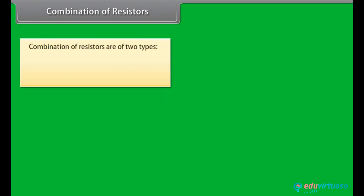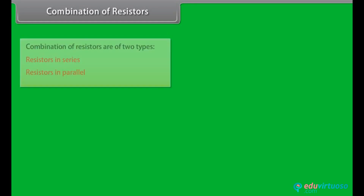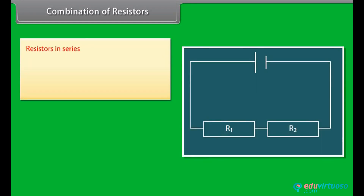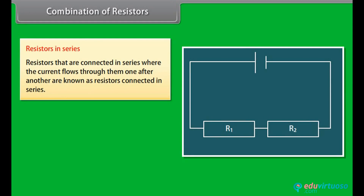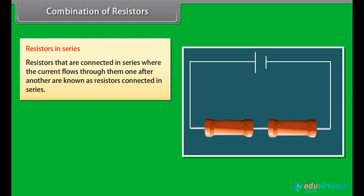Combinations of resistors are of two types: resistors in series and resistors in parallel. Resistors connected in series are those where the current flows through them one after another. Here, the current depends on the applied voltage, the number of components, and the nature of components in the circuit.